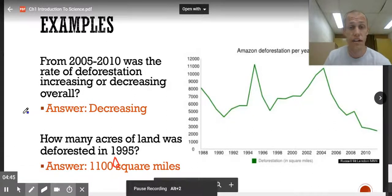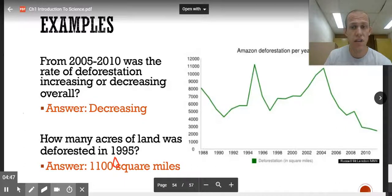So here we have a line graph. This line graph has some trends shown to us with the up and down lines given, and a lot of times we'll just have points. We don't necessarily have the lines filled in for us. So from 2005 to 2010, was the rate of deforestation increasing or decreasing? So let's select that 2005, which would be right here, to 2010, which is right here. It looks like it was high, it's going low, so that would mean decreasing.